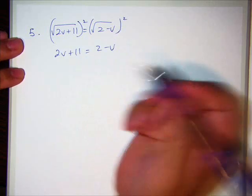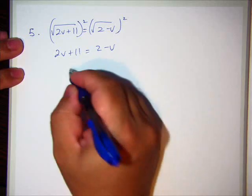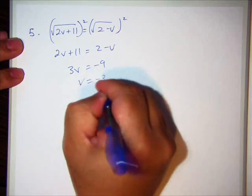Then it's a normal algebra problem. Move the v to the left. Subtract 11 from the right. And I get 3v = -9. So v is -3.